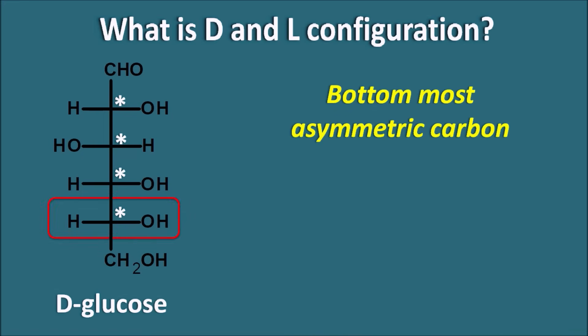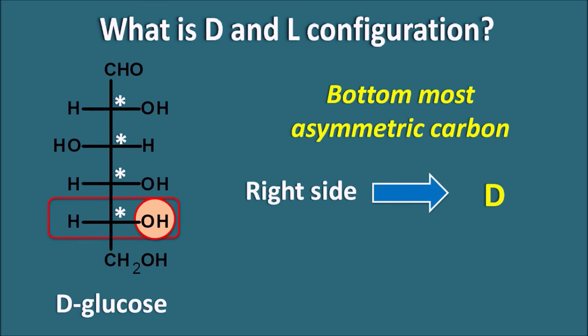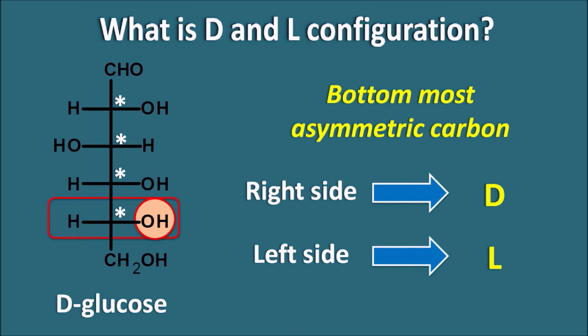At the bottom-most asymmetric carbon, we have to see the position of the OH group. If the OH group is on the right side, we assign D configuration. If it is on the left side, we assign L configuration. Since in the glucose molecule the OH group is on the right side at the bottom-most asymmetric carbon, this is D-glucose. Simply remember: right side = D configuration, left side = L configuration.